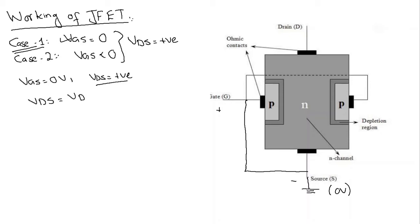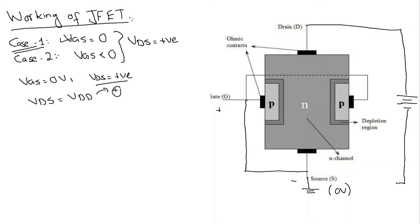The next condition is that VDS equals some positive value. Let's suppose VDS equals VDD, which is some positive value. VDS is the potential difference between the drain terminal and the source terminal. This battery is going to be a positive battery — VDD is connected with its positive terminal to the drain and its negative terminal to the source. So now we have VDD as a positive supply here.